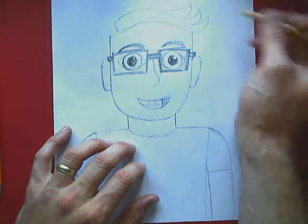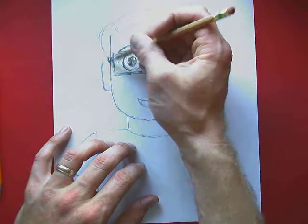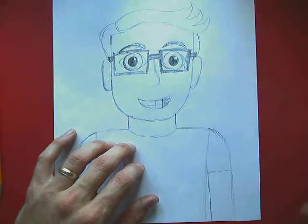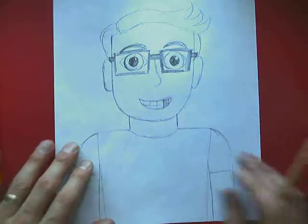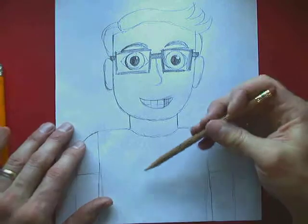So then I'm going to add my hair. Think about what shape your hair is. Mine kind of curls on the end. So I'm going to add little curls onto mine. Make sure I add some hair on the side.